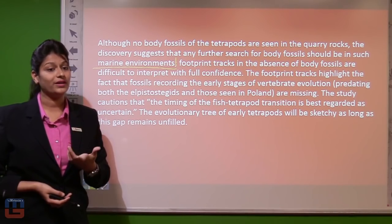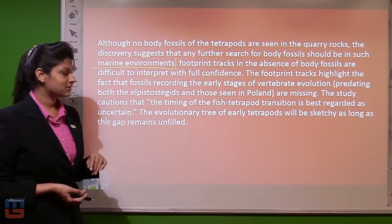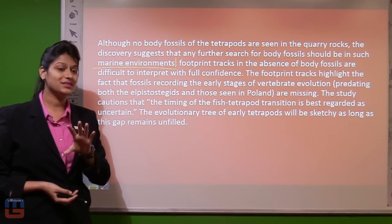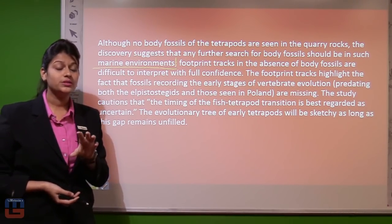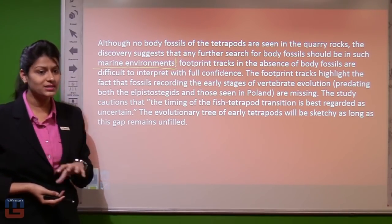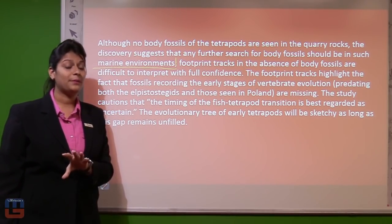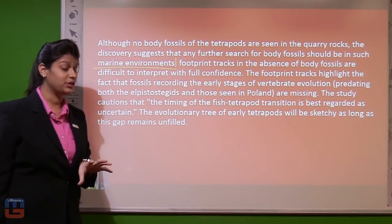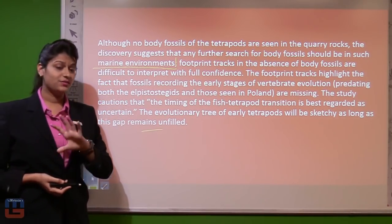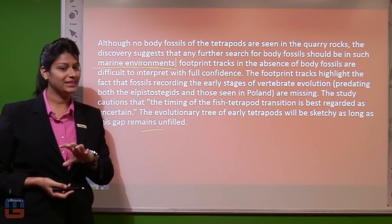The footprint tracks highlight the fact that fossils representing the early stage of vertebrate evolution are missing. The study cautions that the timing of the fish-tetrapod transition is best regarded as uncertain — a vague expression they cannot be very sure of. The evolutionary tree of early tetrapods will be sketchy as long as this gap remains unfilled. Now that we have read the passage properly, answering the questions should get a bit easier.